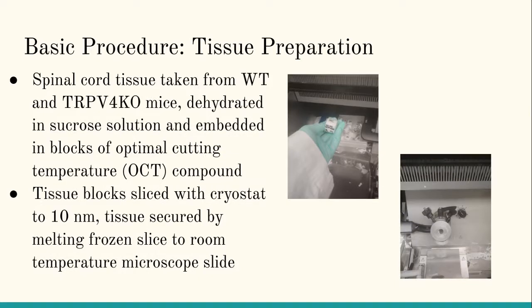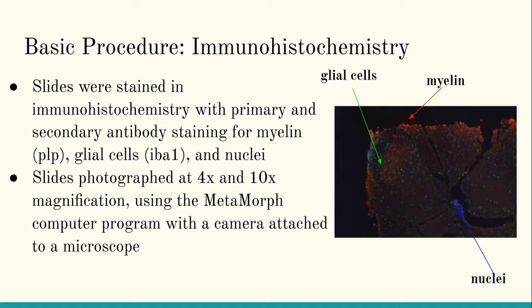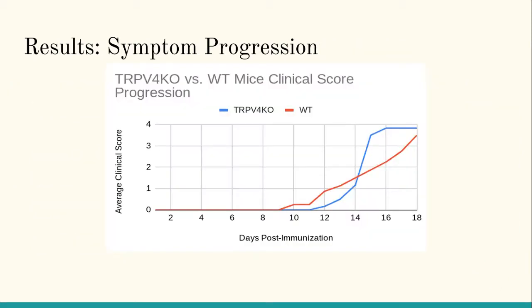To look at this, I took spinal cord tissue sections from the mice groups as described, dehydrated them in sucrose solution, and embedded them in blocks of OCT compound. Then I sliced the tissue and adhered it to a microscope slide, where I did IHC — immunohistochemistry staining — with primary and secondary antibody to highlight glial cells, which show up as green, myelin, which shows up as red, and areas of higher cell concentration. I then photographed these slides with the MetaMorph computer program attached to a microscope.